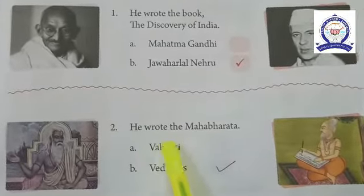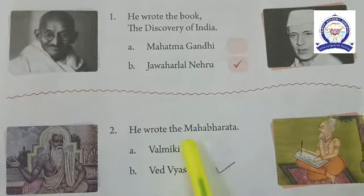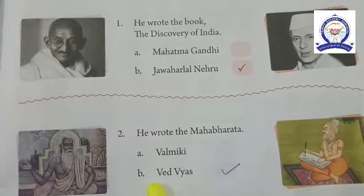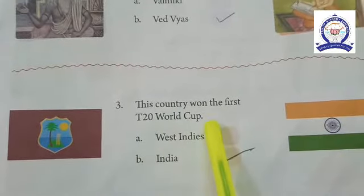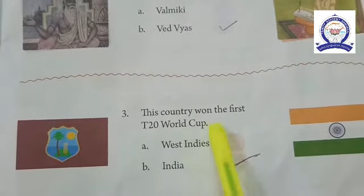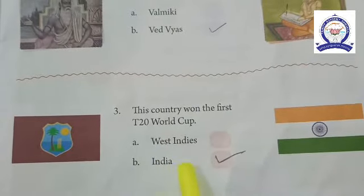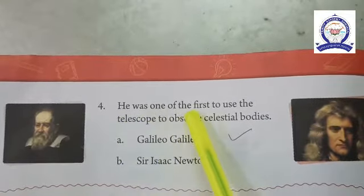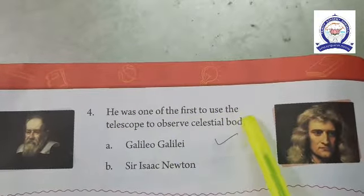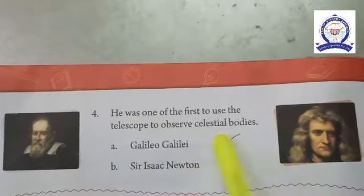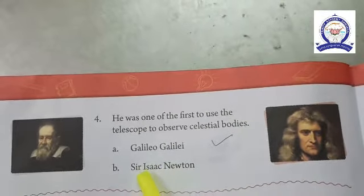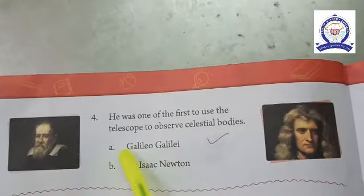Number three: this country won the first T20 World Cup — the answer is option B, India. Number four: he was one of the first to use the telescope to observe celestial bodies — the answer is option A, Galileo Galilei.